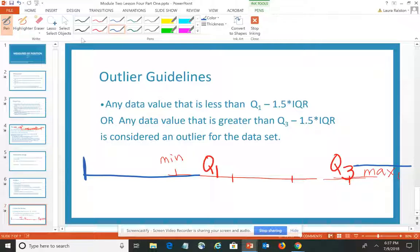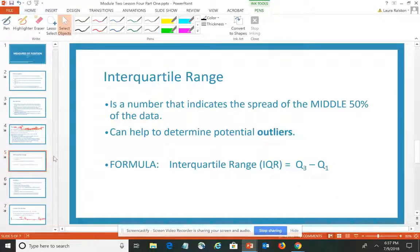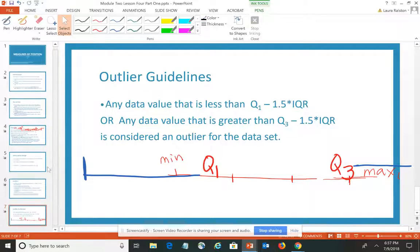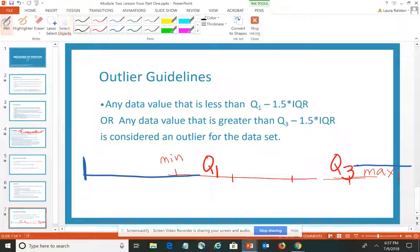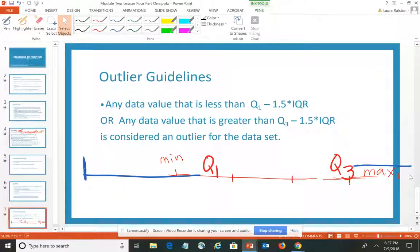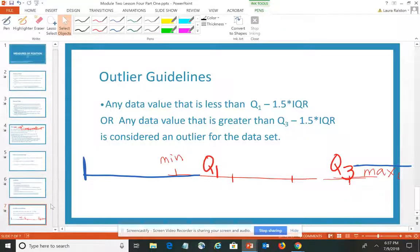What we find is anything that is beyond this point—anything that is outside of my range or fence post that I've created—is going to be an outlier. Anything outside these blue lines would be considered an outlier. We're going to see in the next video how we can create a graph called a box plot that will help us see those outliers. But the main thing is to remember this formula: anything less than Q1 minus 1.5 IQR or anything bigger than Q3 minus 1.5 IQR is going to be considered an outlier.